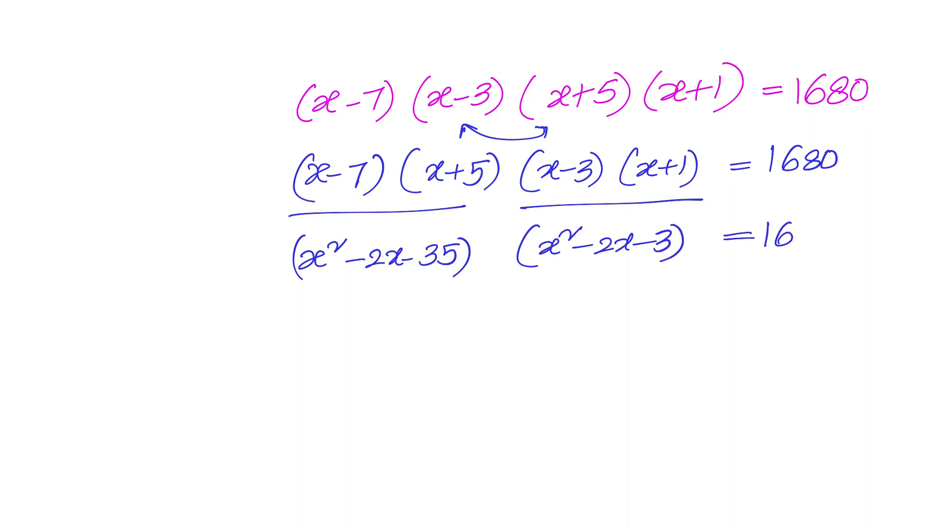Now, the idea behind switching them is that I can take x square minus 2x, which is same in both of them, into another variable z. So it will become z minus 35 into z minus 3 equals to 1680.